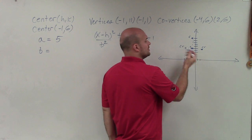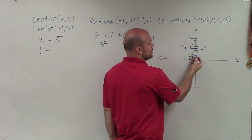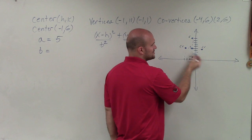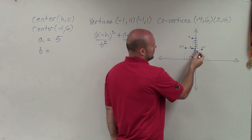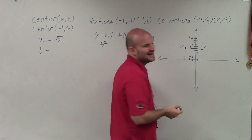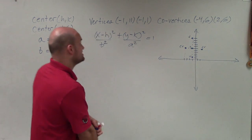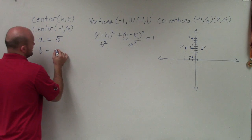And then b is going to be the distance from my covertice to my center. The distance from the center to the covertice is going to be 3.